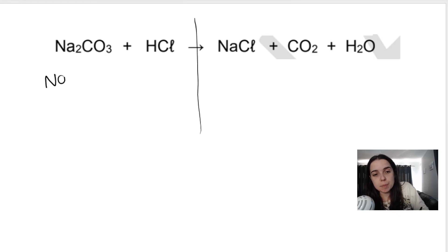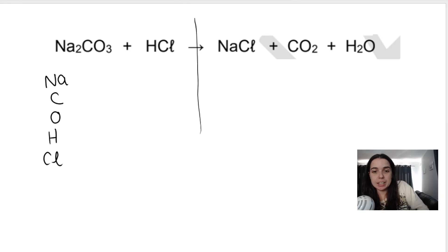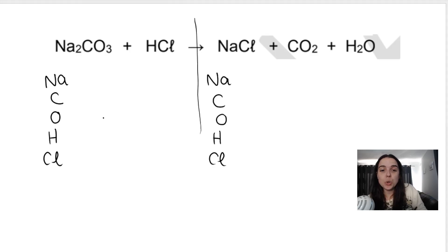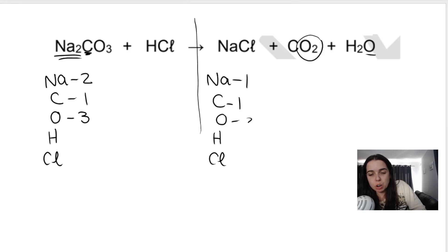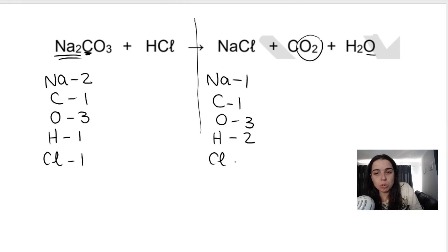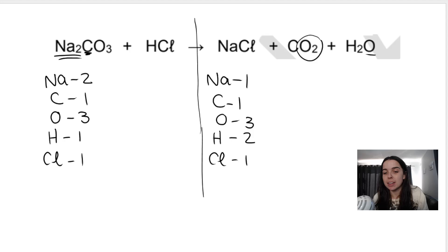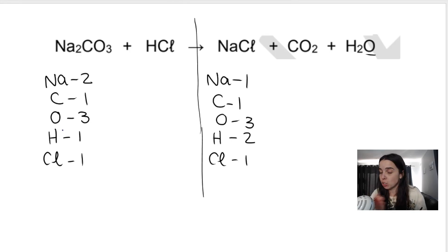It may help you to list the elements — sodium, carbon, oxygen, hydrogen, and chlorine — listed on both sides, and see how many of each you have on each side. For example, on the left hand side I have two sodiums, on the right hand side I have one. On the left I have one carbon, one on the right. I have three oxygens on the left, and two plus one, three oxygens on the right. One hydrogen here, two hydrogens here. One chlorine, and one chlorine.